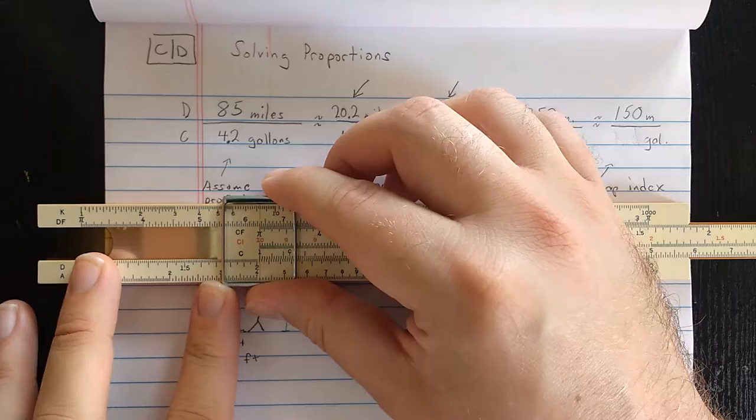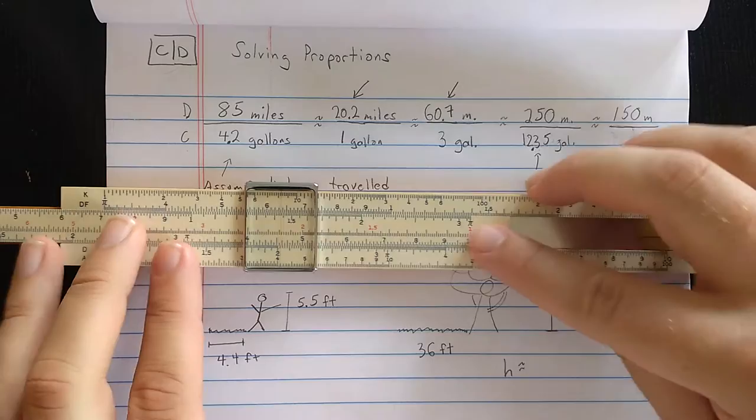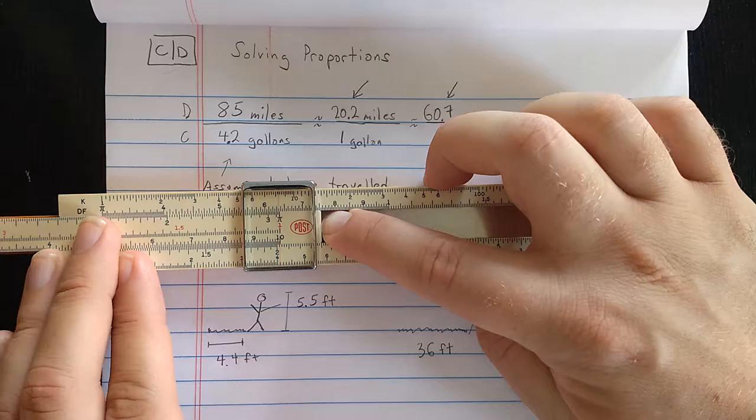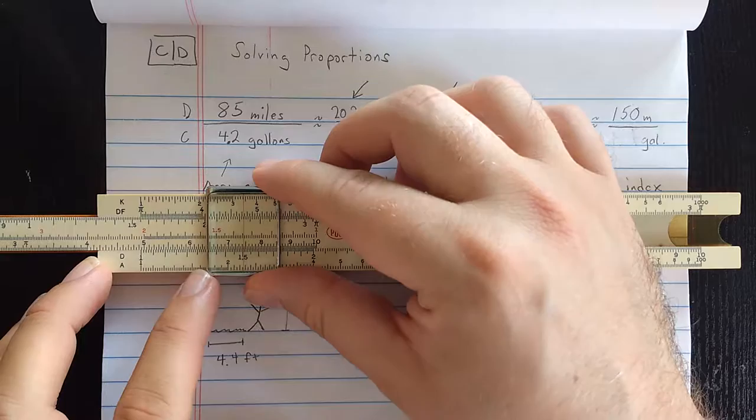So what I can do is I can take that 1 there, hold that position with the cursor, and slide the other index under it. This is called swapping the index. Once I've swapped the index, then I can find that 1.5 on the D scale and read the correct result.